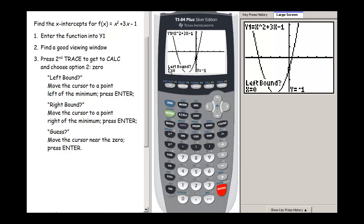It's asking me for a left bound. I need to move my cursor so that I am to the left of this x-intercept. Right now I'm on the right side, and I need to be over here to the left of it. I'm going to keep scrolling until I'm definitely to the left. Once I'm to the left, I'm going to press ENTER.